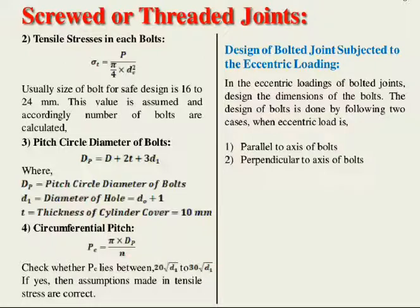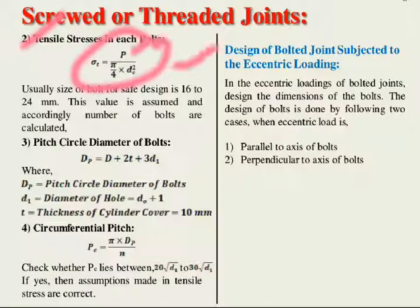The tensile stress in each bolt is calculated using the formula: σt = P / (π/4 × dc²). An important point: usually, the size of the bolt for this design is assumed in the range of 16 to 24 mm. This assumed value determines the number of bolts required.